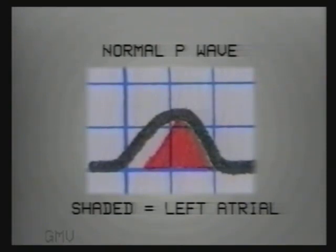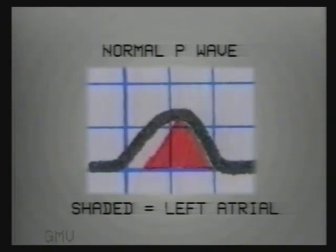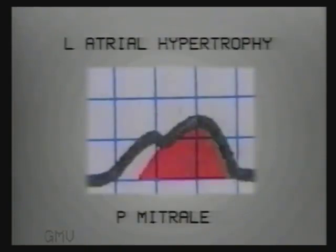The SA node starts depolarization in the right atrium. So the initial part of the P wave is contributed by the right atrium, and the later part — shaded in the diagram — is contributed by the left atrium.